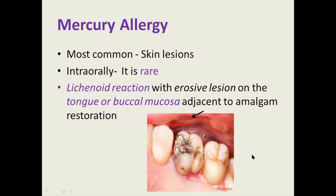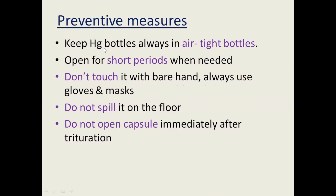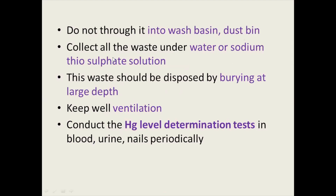Preventive measures for mercury toxicity: keep mercury in airtight bottles; open the bottle for a short period only when needed; don't touch with bare hands — always use gloves and mask; do not spill on the floor; do not open capsule immediately after trituration as you may inhale vapors; do not throw waste into the wash basin; collect all waste under water or sodium thiosulfate solution; dispose waste by burying at large depth in landfills; keep the room well ventilated; and conduct mercury level determination tests in blood, urine, and nails periodically.